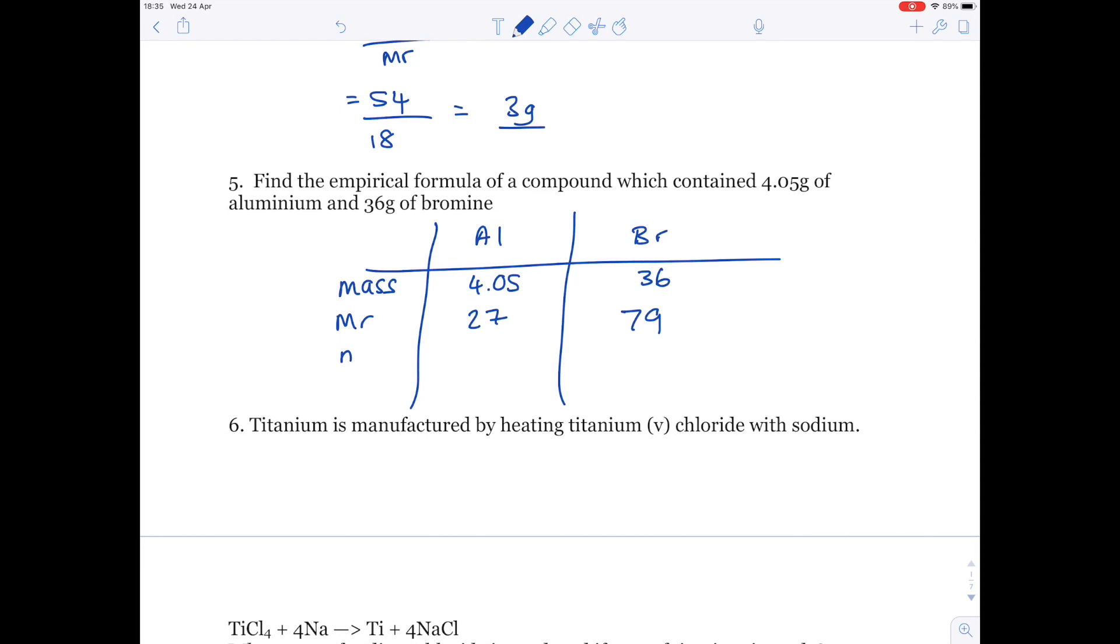To find the number of moles, do mass divided by MR. So, 4.05 divided by 27 to give 0.15 number of moles of aluminium. 36 divided by 79 gives the number of moles of bromine of 0.4556.